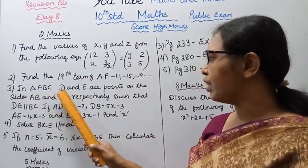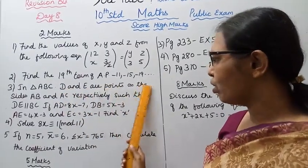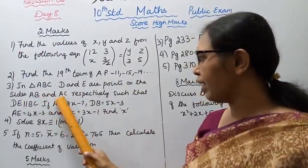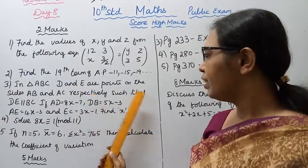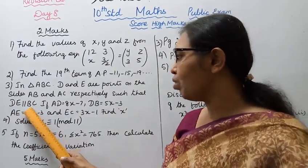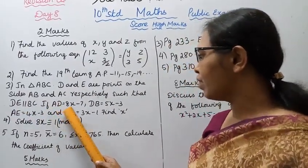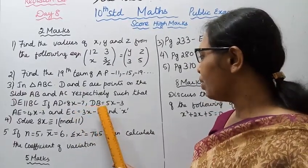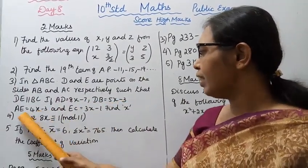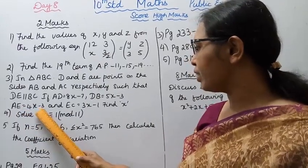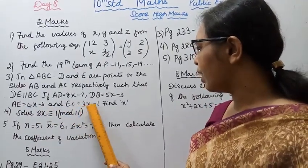Third, in triangle ABC, D and E are points on sides AB and AC respectively such that DE is parallel to BC. If AD = 8x - 7, DB = 5x - 3, AE = 4x - 3, EC = 3x - 1, find x.